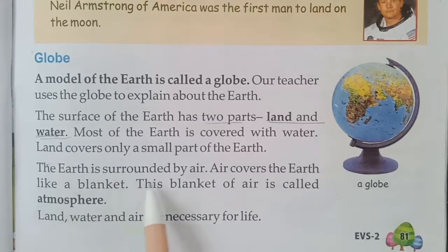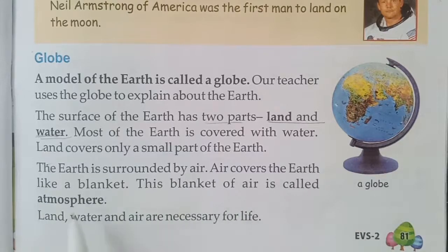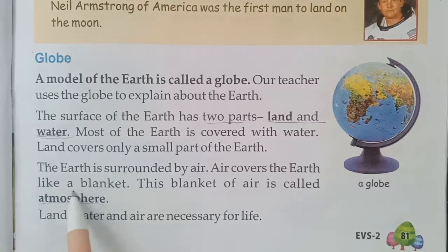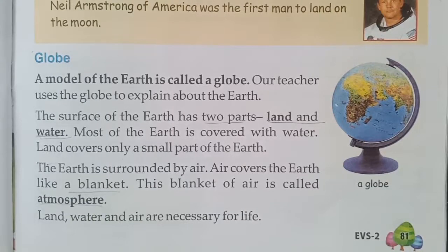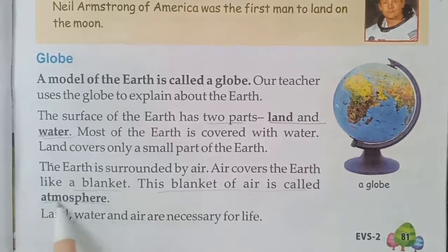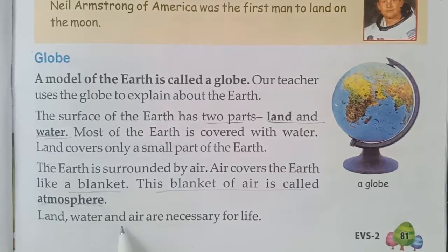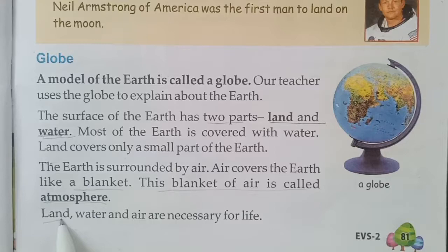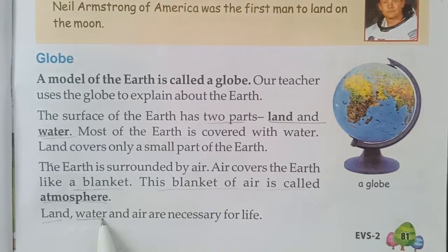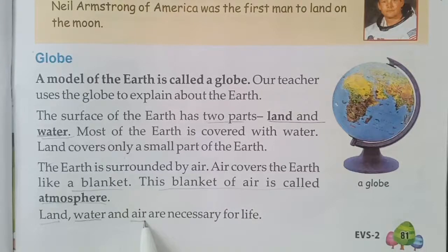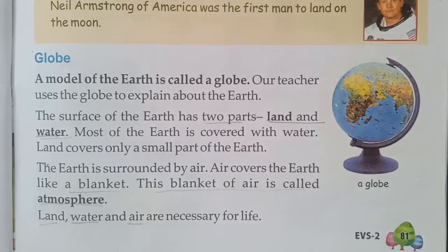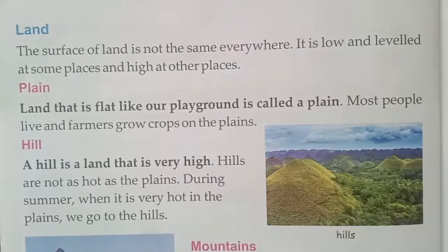The earth is surrounded by air. Air covers the earth like a blanket. This blanket of air is called the atmosphere. Land, water, and air are necessary for life. Land is necessary because we live on it. Water is necessary because we drink it. And air is necessary because we breathe it.